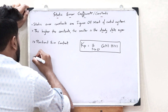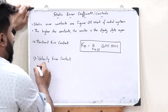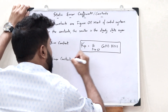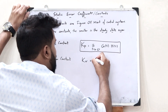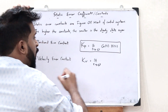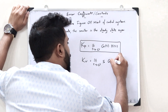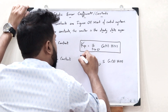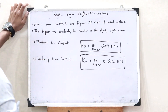Next, we have what we refer to as the velocity error constant. The velocity error constant is represented by Kv, which is given as Kv = lim(s→0) s·G(s)·H(s). This is the value of the velocity error constant.